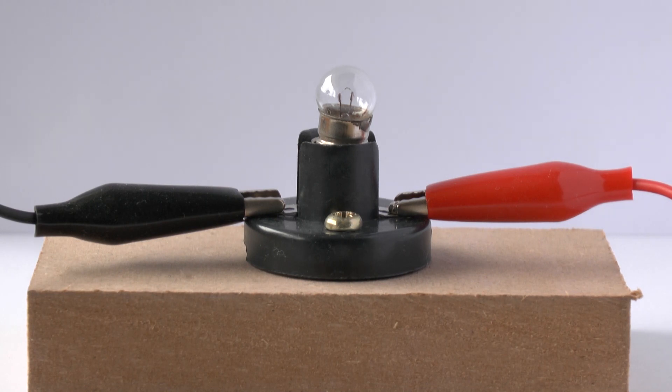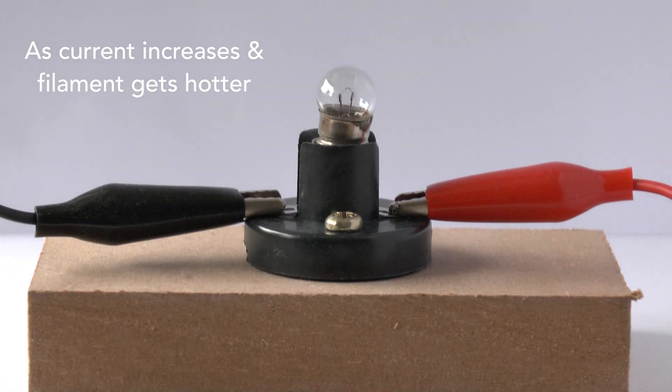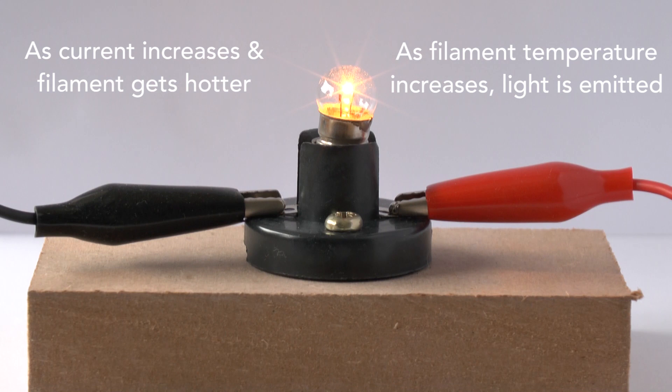Incandescent lamps operate because the current passing through the filament dissipates energy as heat. This raises the temperature of the filament so that it becomes white hot. And even though most of the energy is converted into heat, some is converted into light.